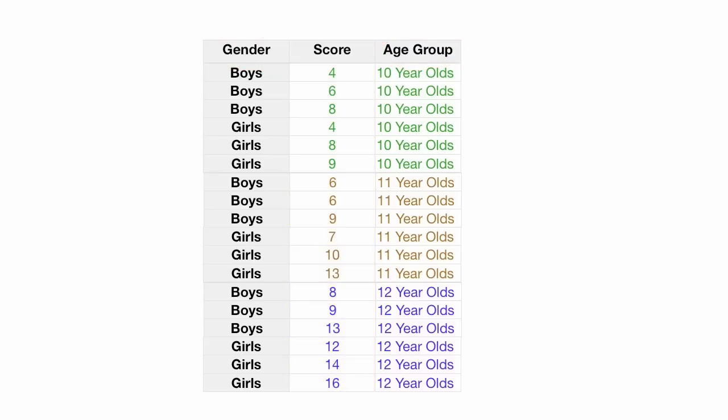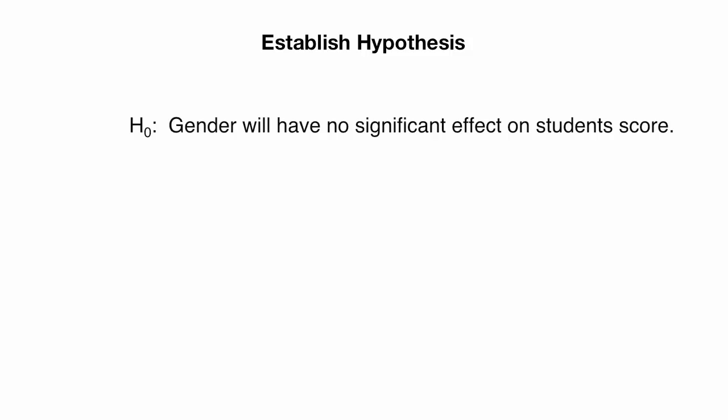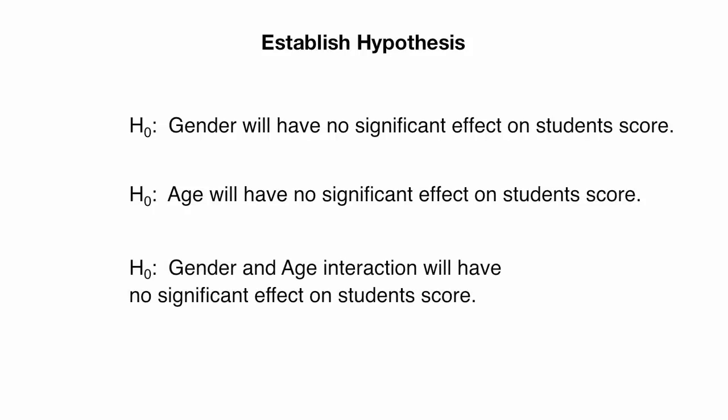I have three hypotheses. The first: gender will have no significant effect on student score. The second: age will have no significant effect on student score. The last: gender and age interaction will have no significant effect on student score.